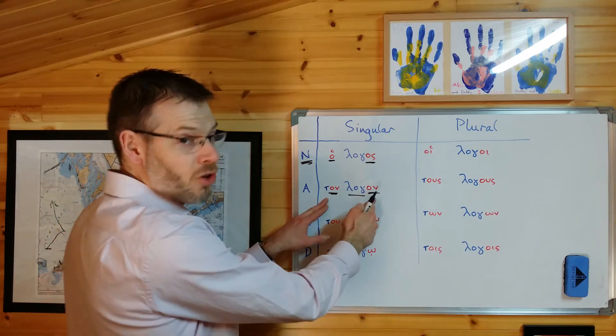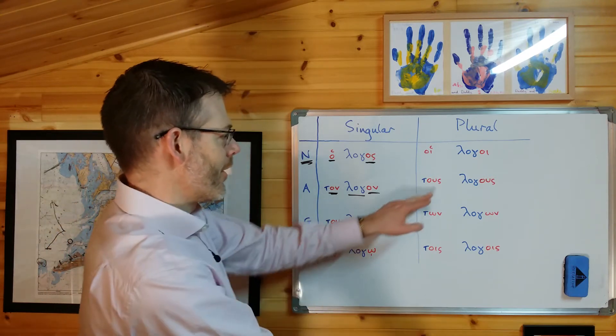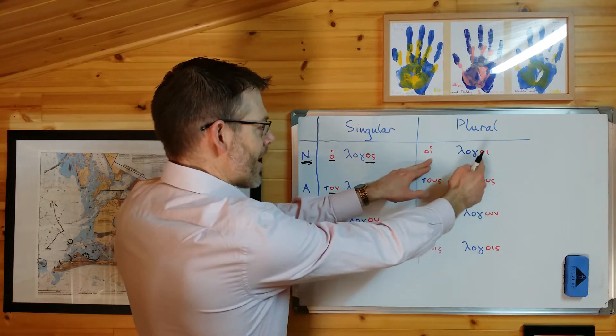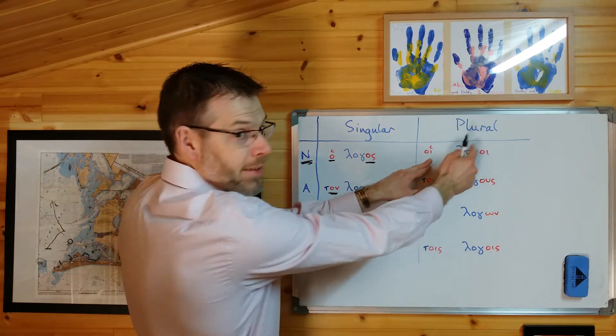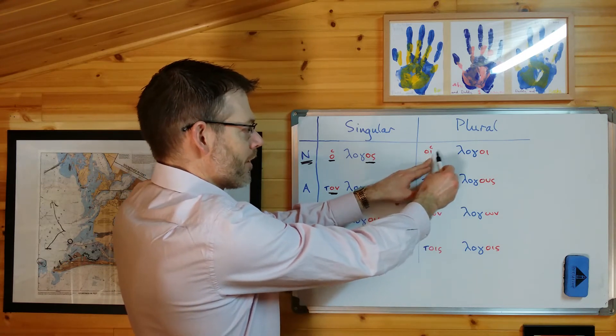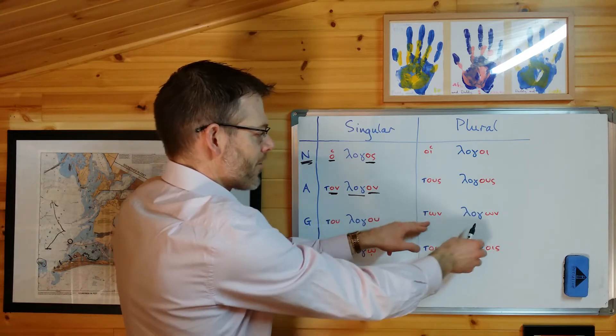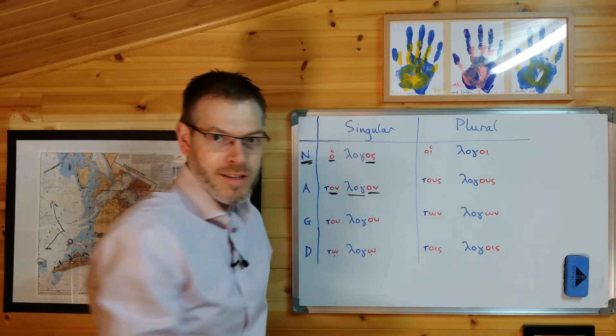But look, ton logon, tu logoo, to logoo, tus logoos. So you've got it here, hoi logoi. There's no rough breathing here, obviously, because it's not at the beginning of the word, but you've got the same other letters. Omicron, iota, omicron, iota. Ton logon, tus logoos, ton logon, tois logois.